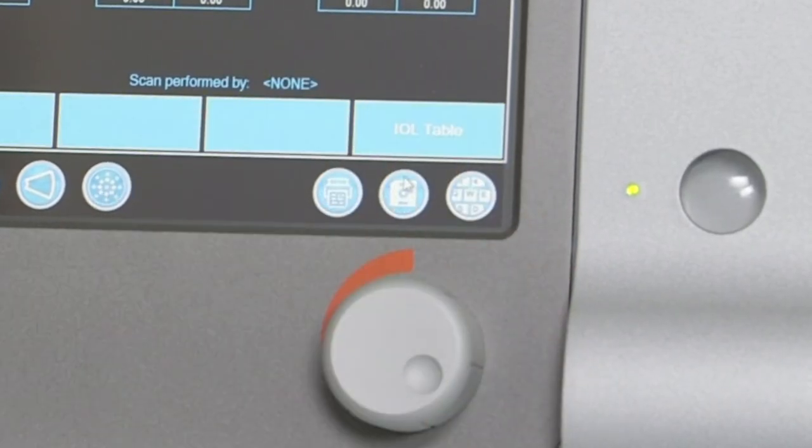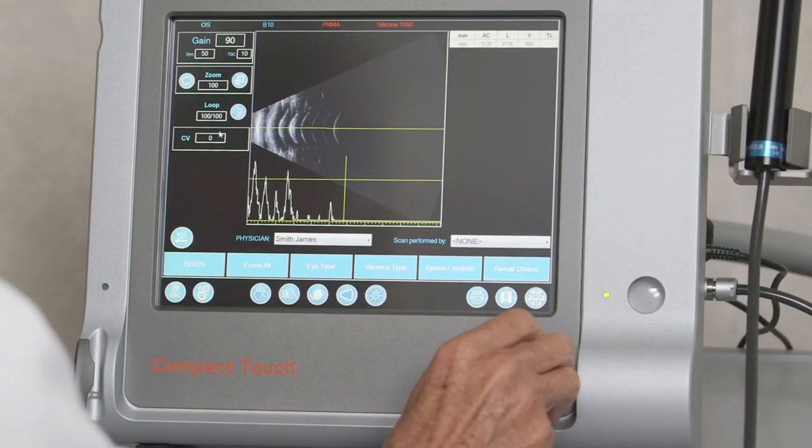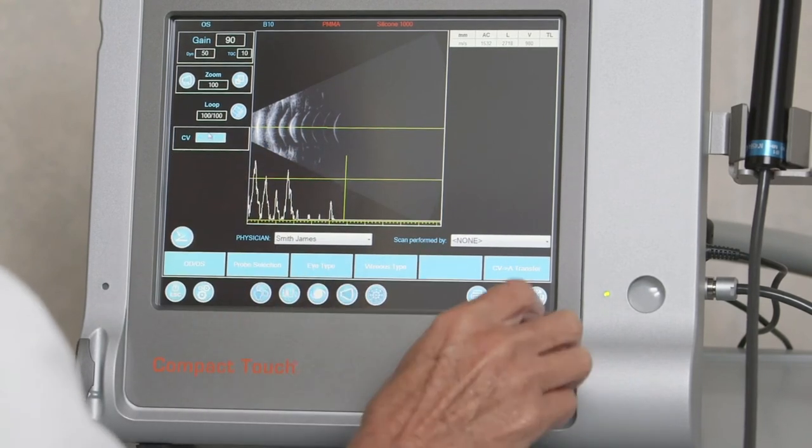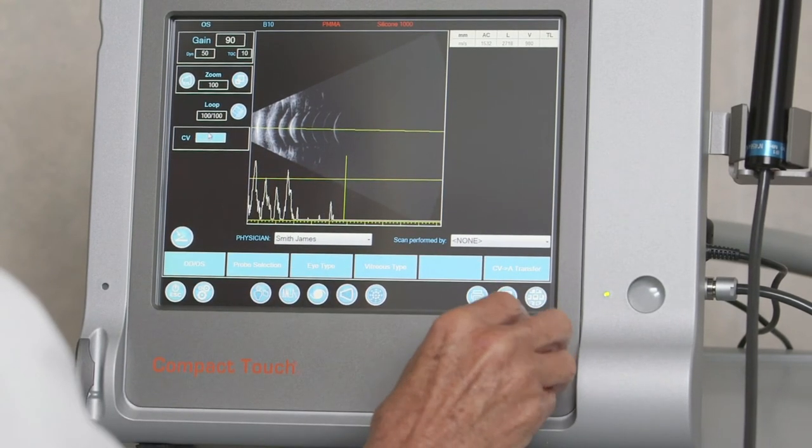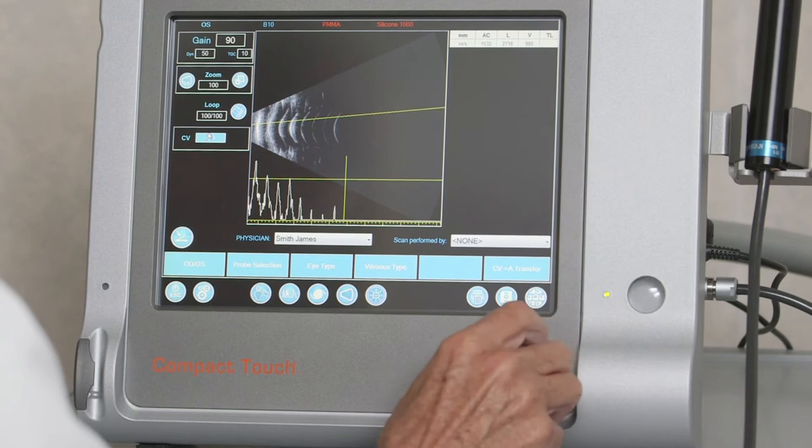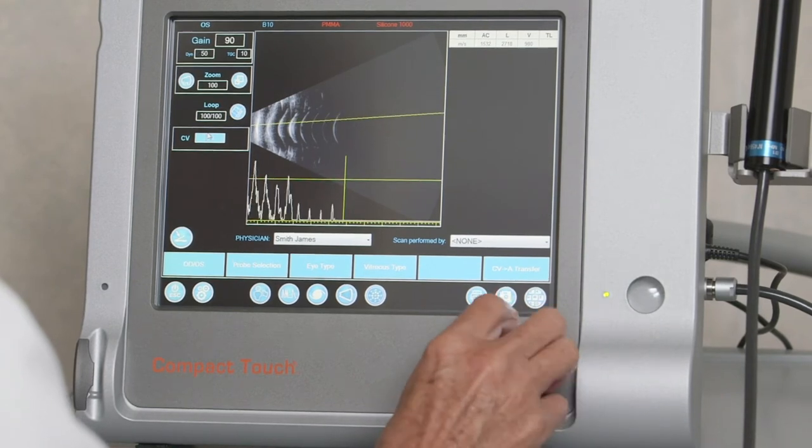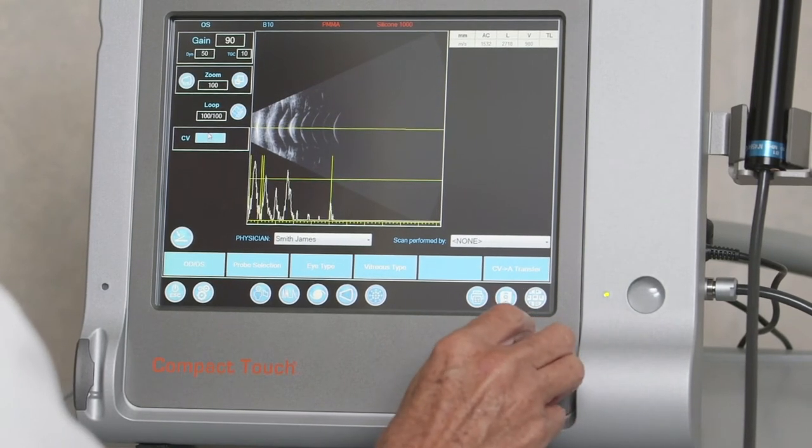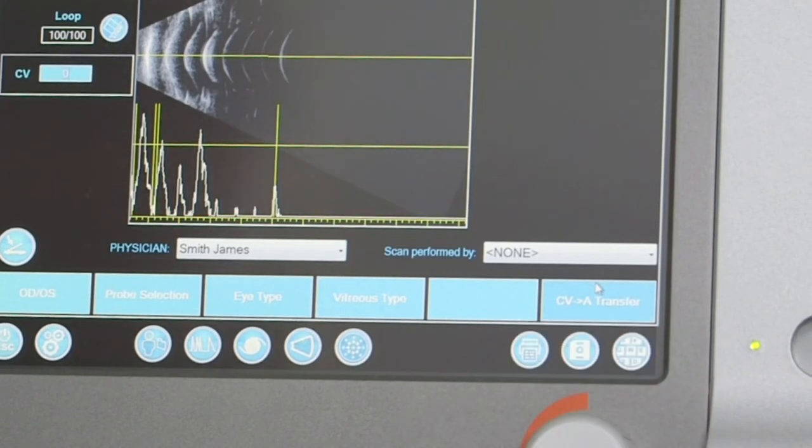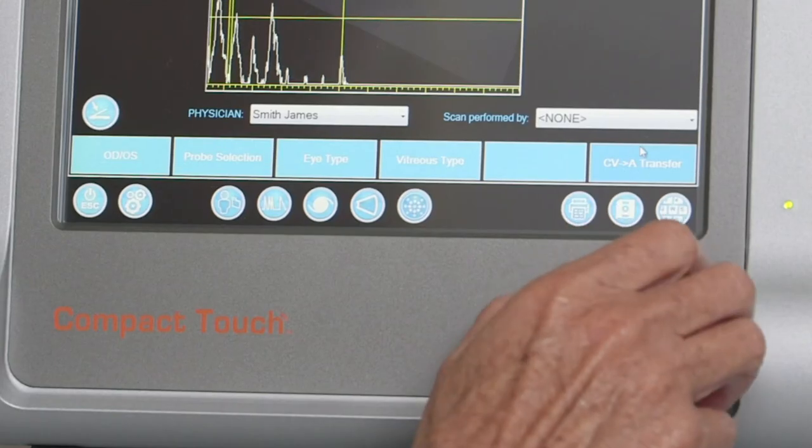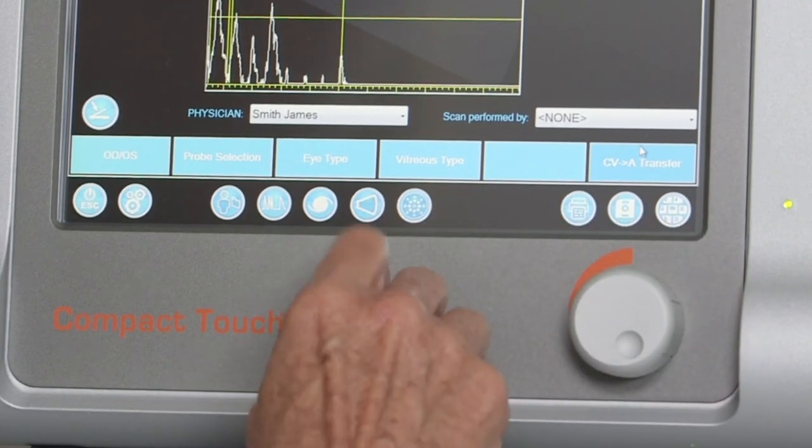Results can be saved by touching the save icon at the bottom or printed by selecting print. For B-mode guided biometry performed with the 10 MHz B-scan probe, the position of the cross-vector C-V line can be adjusted by left-clicking and moving with the mouse, or by changing the value in the C-V field. Touching the C-V-A transfer button at bottom right adds the measurements from the selected scan into the result table.